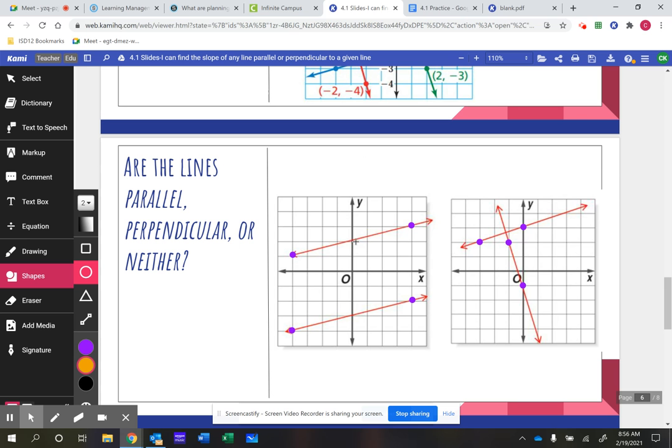So let's start with this first one right here. Obviously, they look like they're parallel just by looking at them. But for us to prove that, we have to determine this by finding the slope of the line.